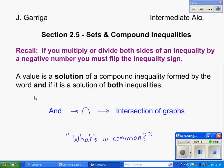Next, a value is a solution of a compound inequality formed by the word AND if it is a solution of both inequalities. We're going to be working with AND first, which is the intersection represented with this symbol. And it means the intersection of graphs. Basically, when we look at two inequalities, we want to know what's in common when we're asking for the intersection of those.